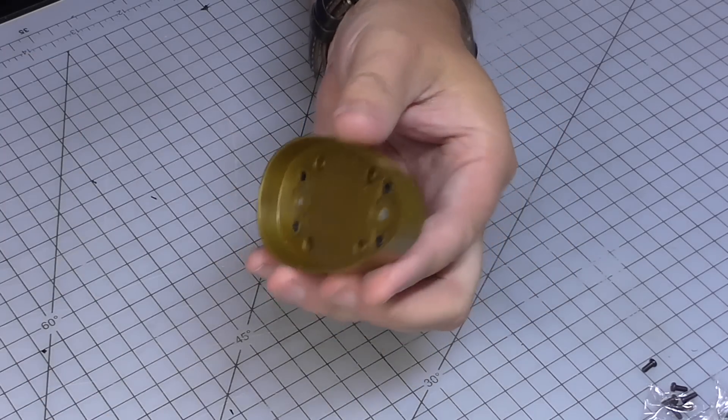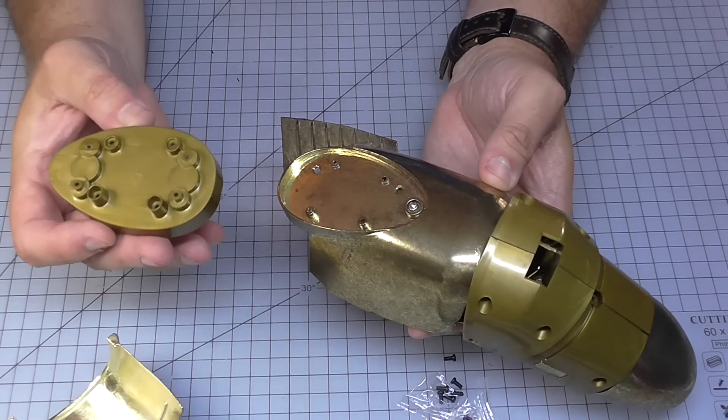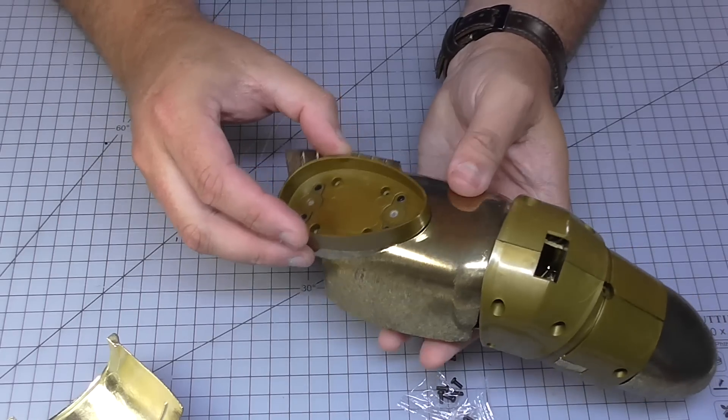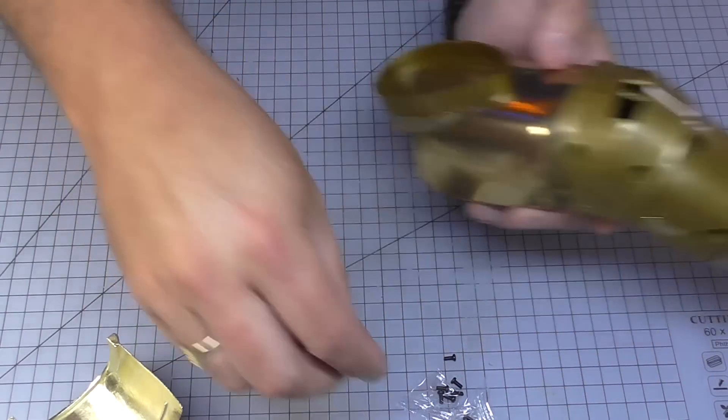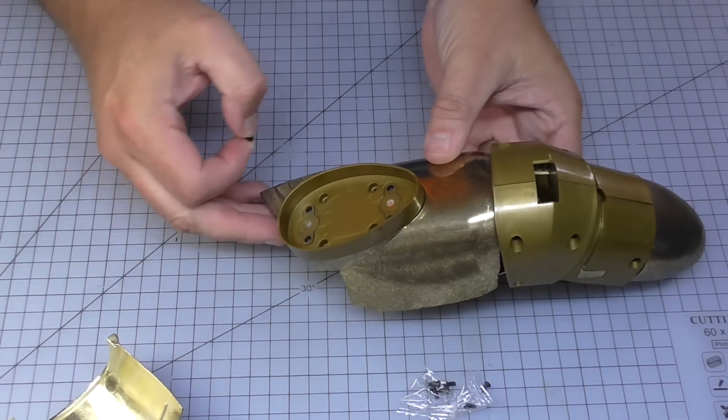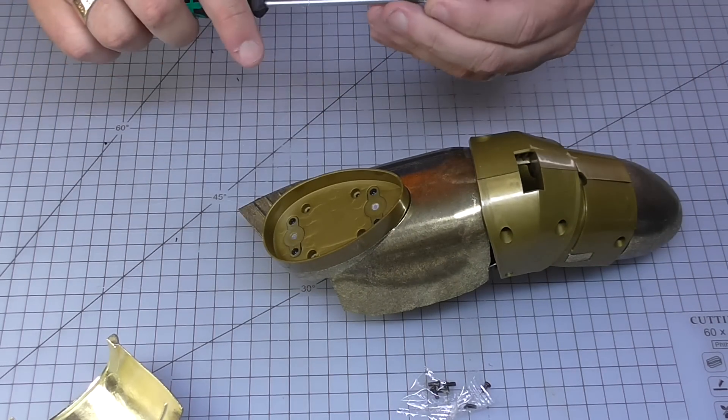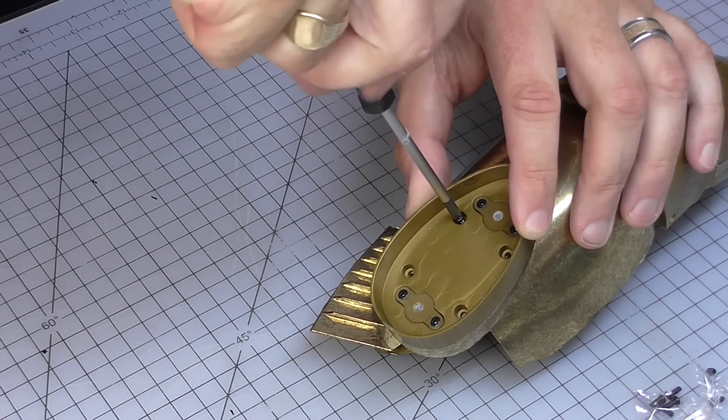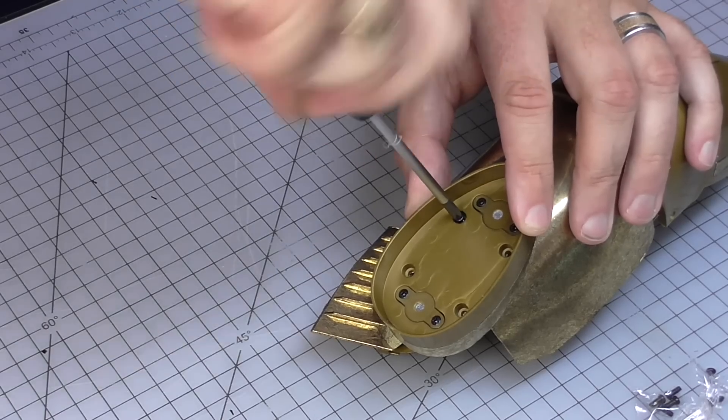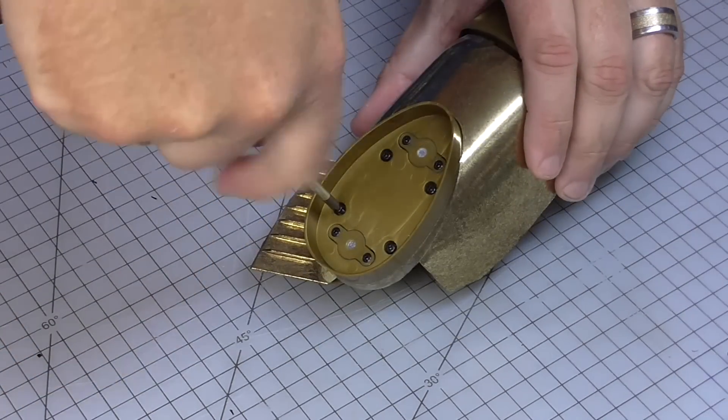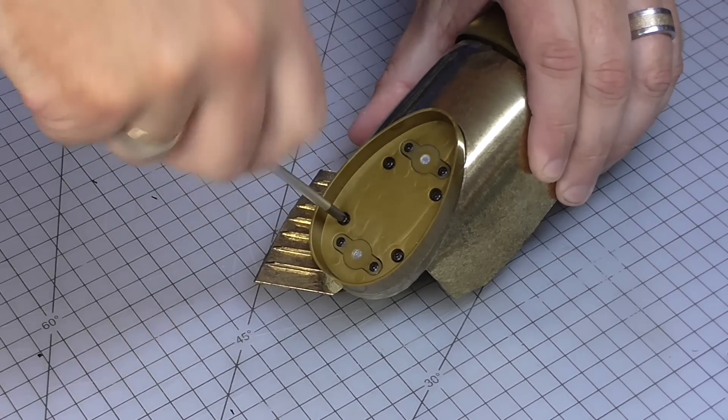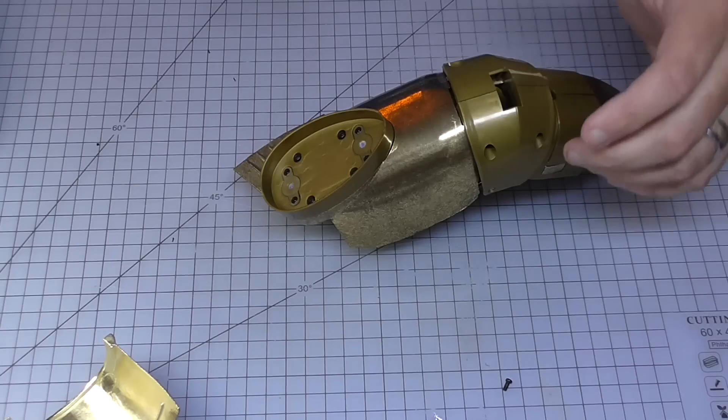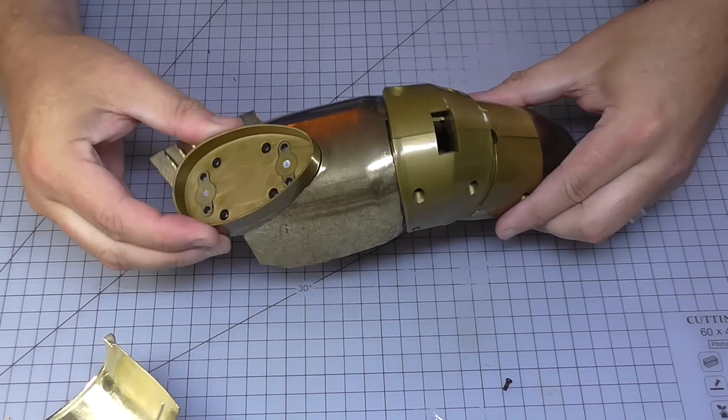So this is going to be going into the thumb section that we just created here. We're going to be lining up these four holes with this section, following the same contour around that metal section there. And once again, I've got these black screws that we're going to be screwing into the four holes that we can see here. I am using my PH1 screwdriver on this build rather than the PH0. I just find it easier to screw these in. But that's not going anywhere.